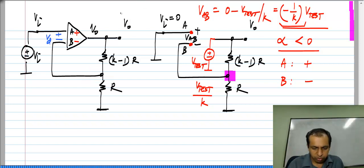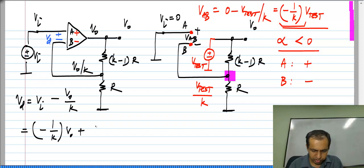So, this voltage is V naught by K and this voltage is V i. So, V D is V i minus V naught by K or basically minus 1 by K times V naught plus V i.